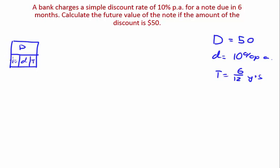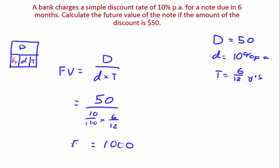You want to find your future value. So shade that out and your future value formula will then be discount on discount rate multiplied by time. That's 50 on your discount rate which is 10% multiplied by six on twelve. Essentially your answer is 1000 and that is your future value.